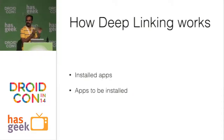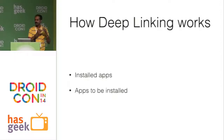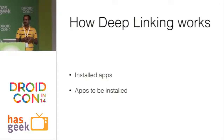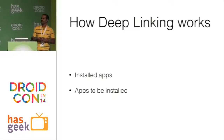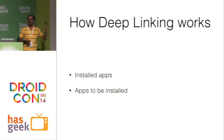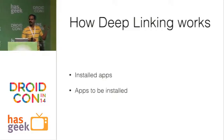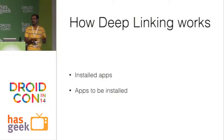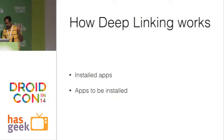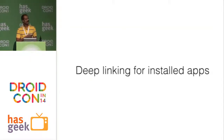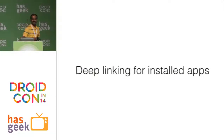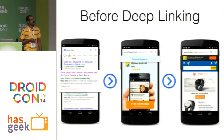I'll split the working part of deep linking into two scenarios: one is how I can apply deep linking on apps that are already installed on my phone, versus how I can apply deep linking on apps that are yet to be installed. You can apply deep linking in both scenarios. Starting with the first use case — deep linking for installed apps.